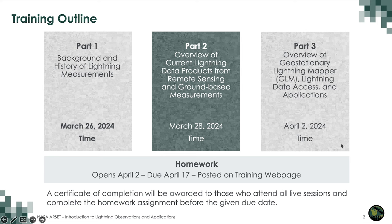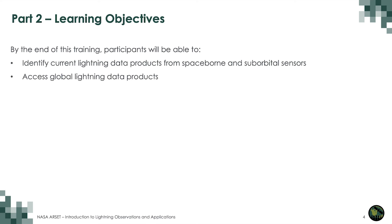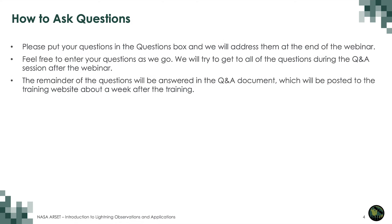Here is the training outline. We have one more session left next week on April 2nd. Homework will be posted on the same day on our webpage. A Certificate of Completion will be awarded to those who attend all live sessions and submit the homework by the due date. The learning objectives for this session: by the end of this training, you'll be able to identify current lightning data products from space-borne and sub-orbital sensors and see how to access global lightning data products.